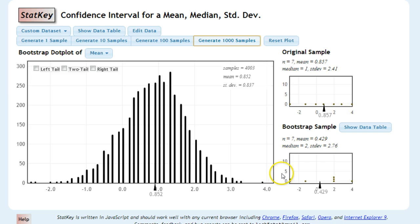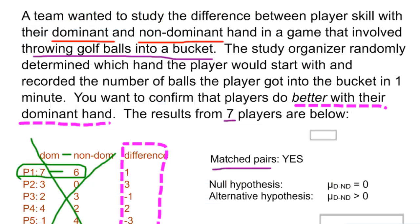From generating a bunch of samples here, if we're trying to find a confidence interval, we want to do a two-tail. And let's say we're looking at our middle 95%, you would say that our mean difference goes anywhere from negative 0.857 to positive 2.429. And that's all at 95% confidence, we can say that dominant hand is stronger than non-dominant hand.